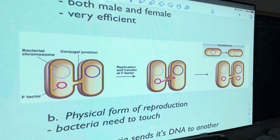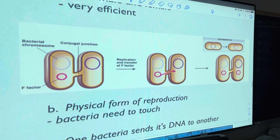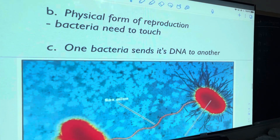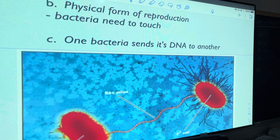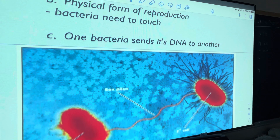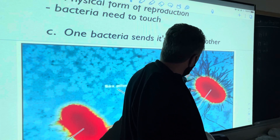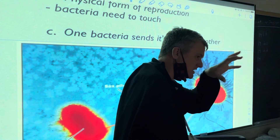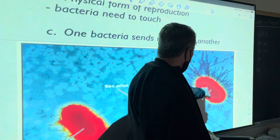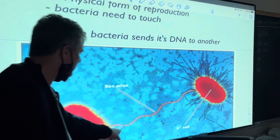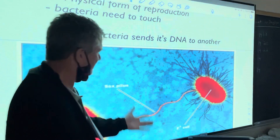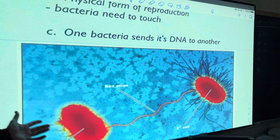This sexual reproduction — where bacteria have to physically touch and trade DNA — is called conjugation. Here's an actual colored picture where one bacterium is actually touching another and trading DNA. You can see the pili — like a bacterium's hands. It also has one called a sex pilus that reaches out and makes contact.